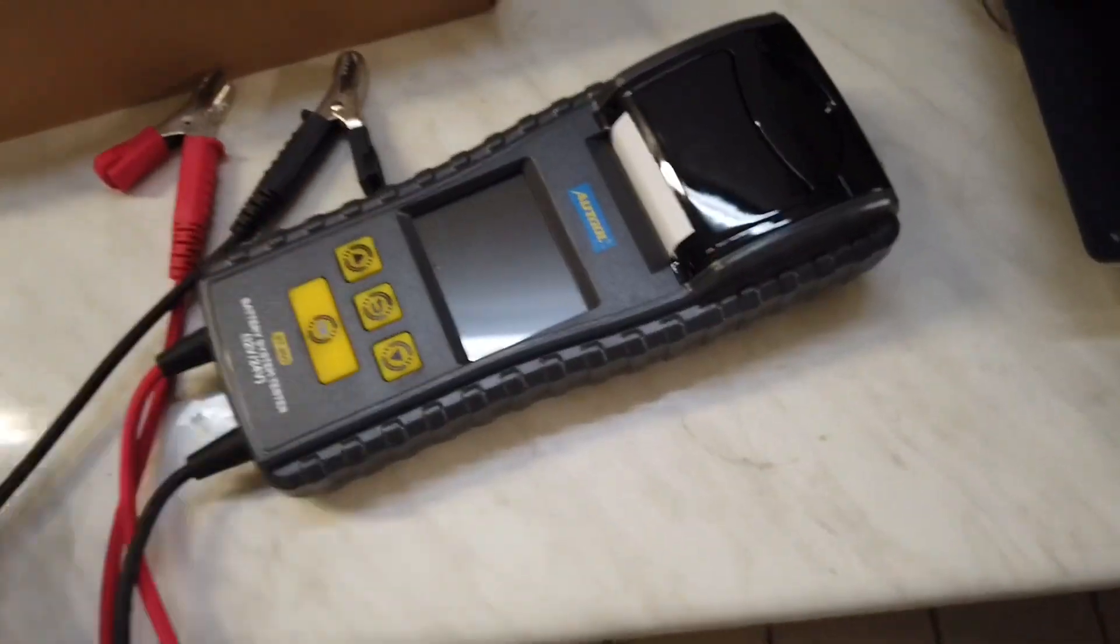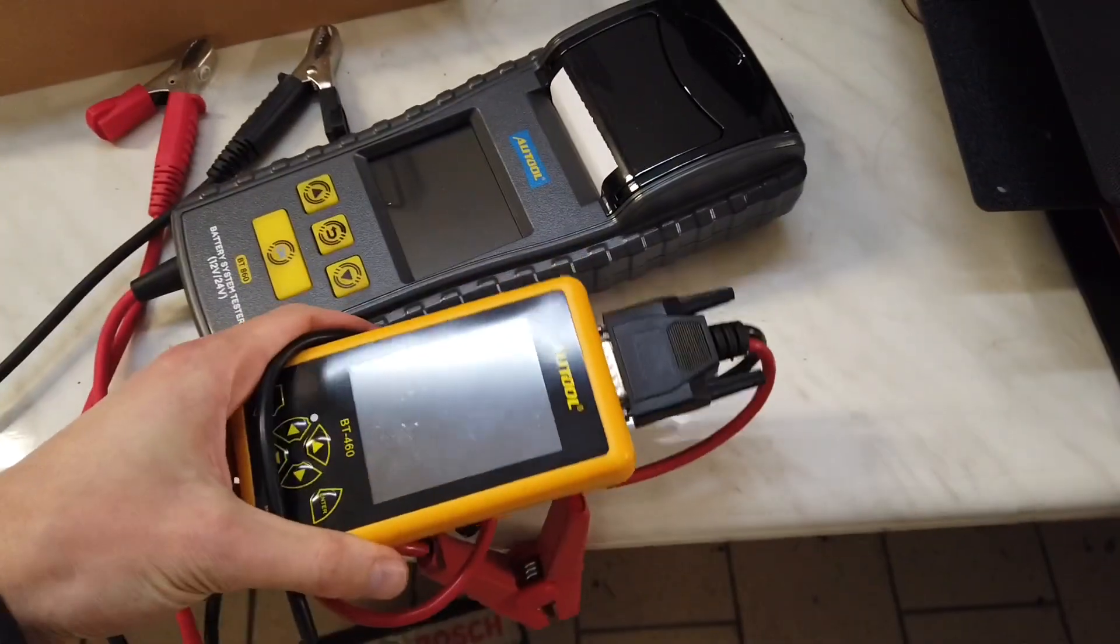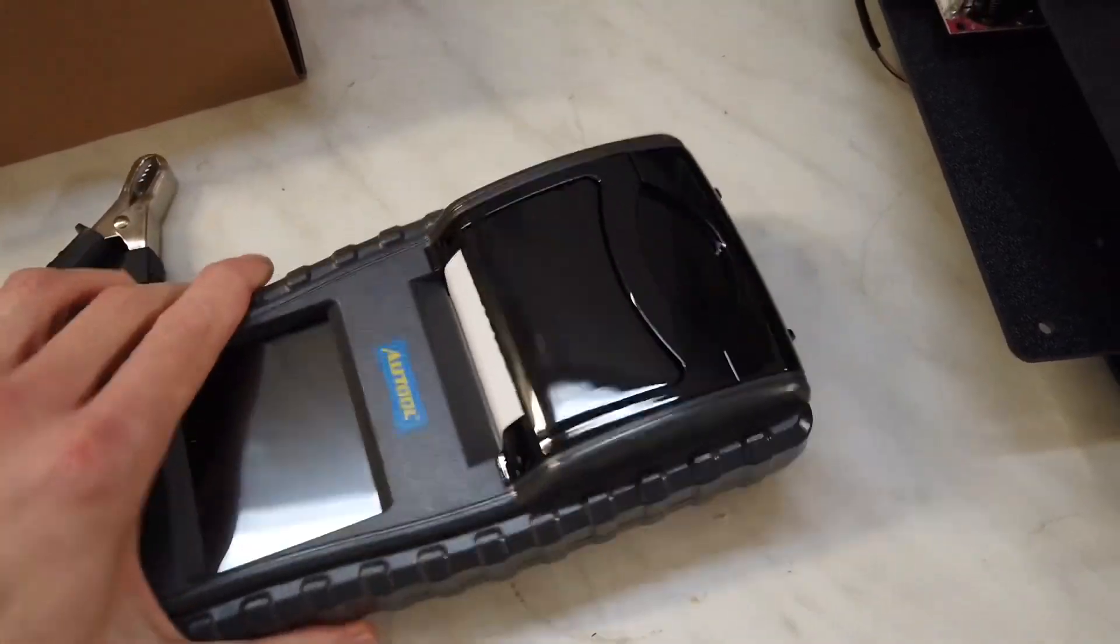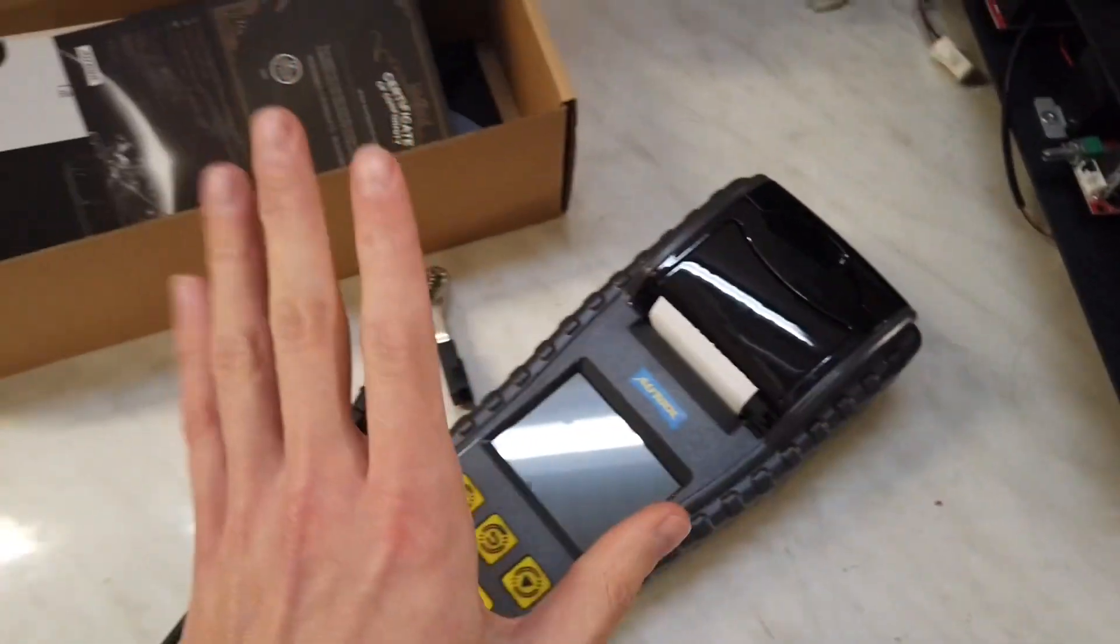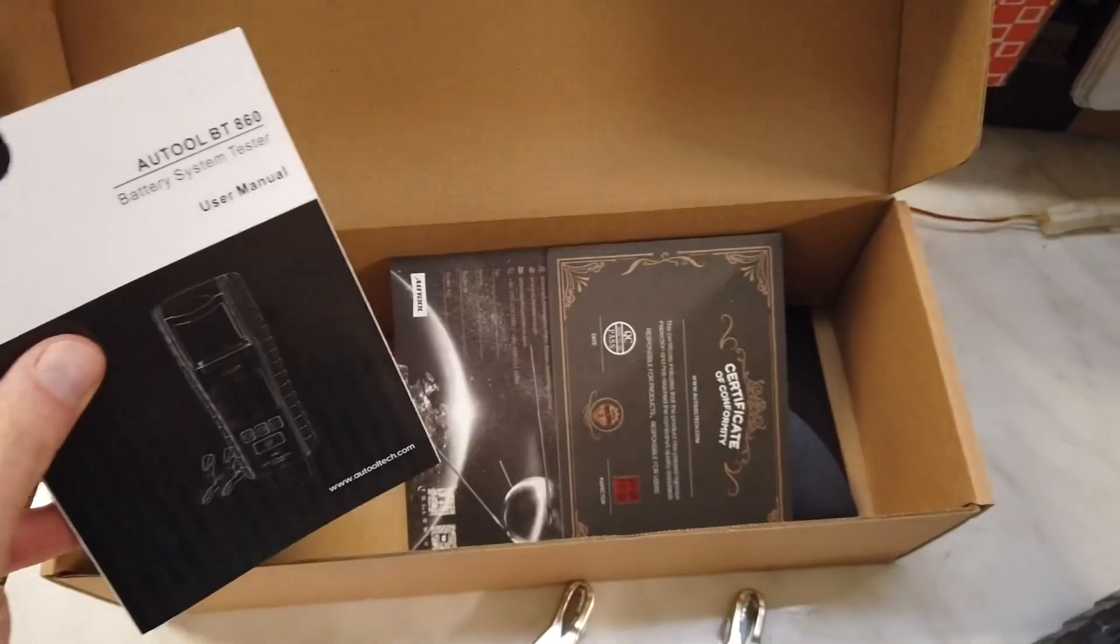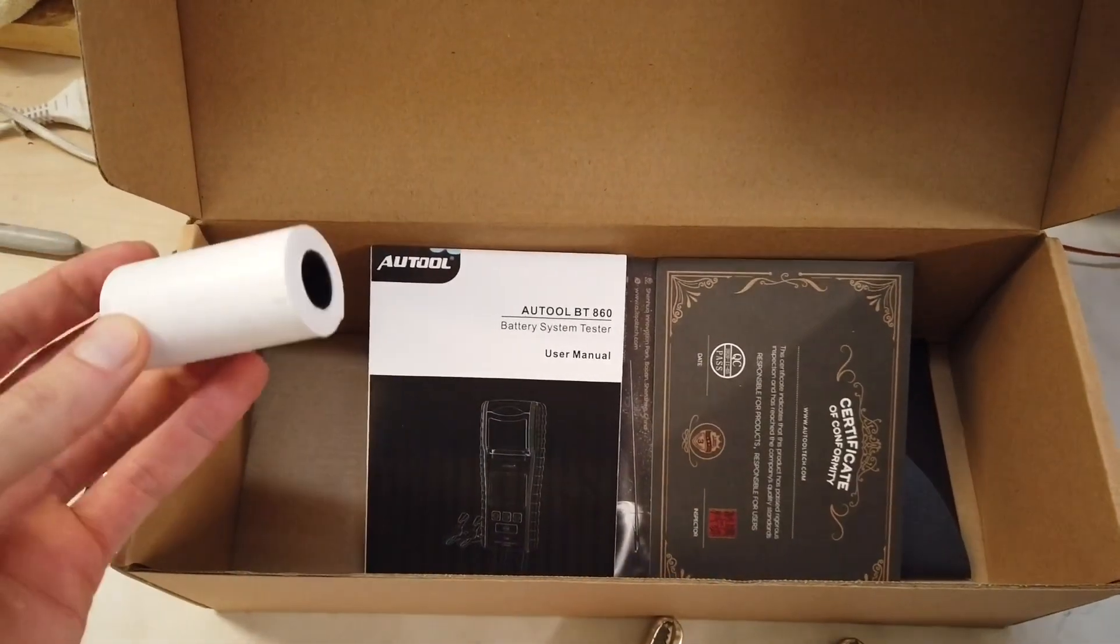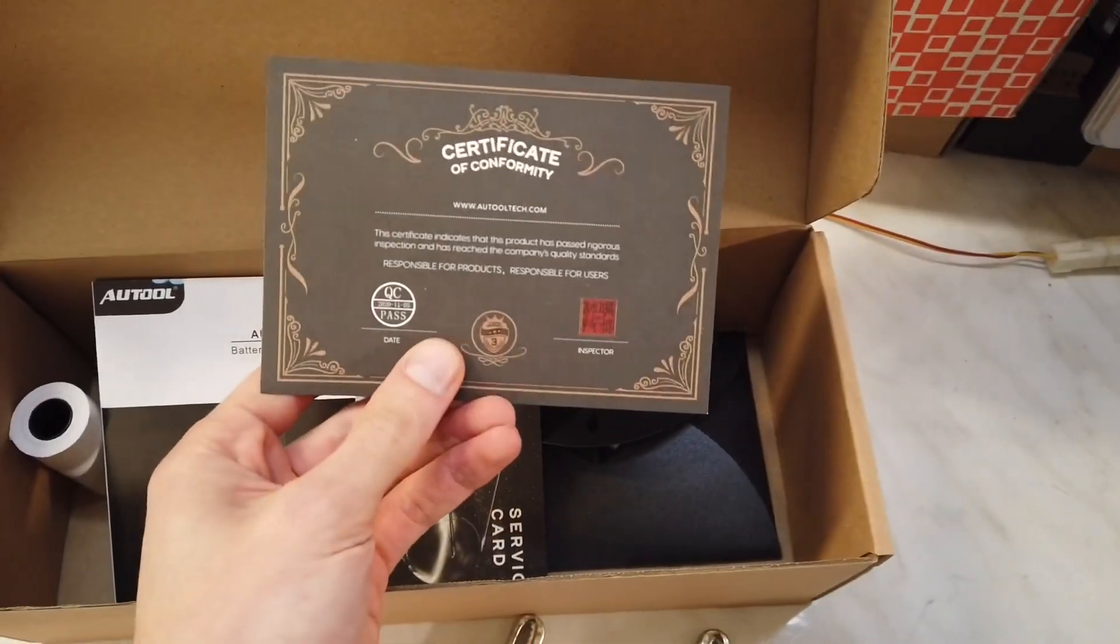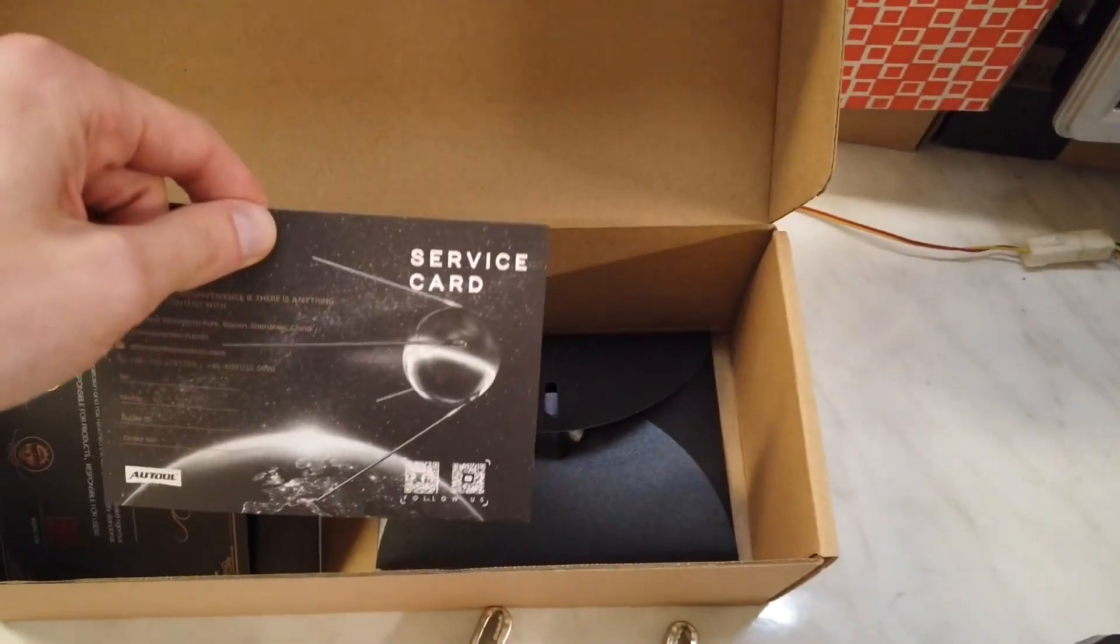This is how it looks. It's pretty big compared to the old one, but I believe this is mostly because of the built-in printer which is over here. In the box you'll have the user manual, thermal printing paper, quality control certificate, and service card.